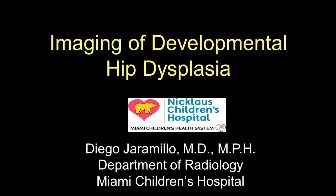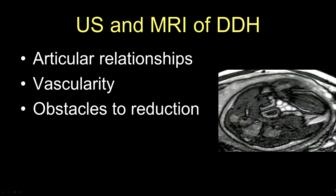Good morning, I'm Diego Jaramillo and I'm going to be talking about imaging of developmental hip dysplasia. This is an image of a prenatal hip dislocation. You can see here the normal hip and here the acetabulum, and here is the posteriorly dislocated hip relative to the acetabulum. We're going to divide this talk in three main sections: articular relationships, vascularity, and obstacles to reduction.